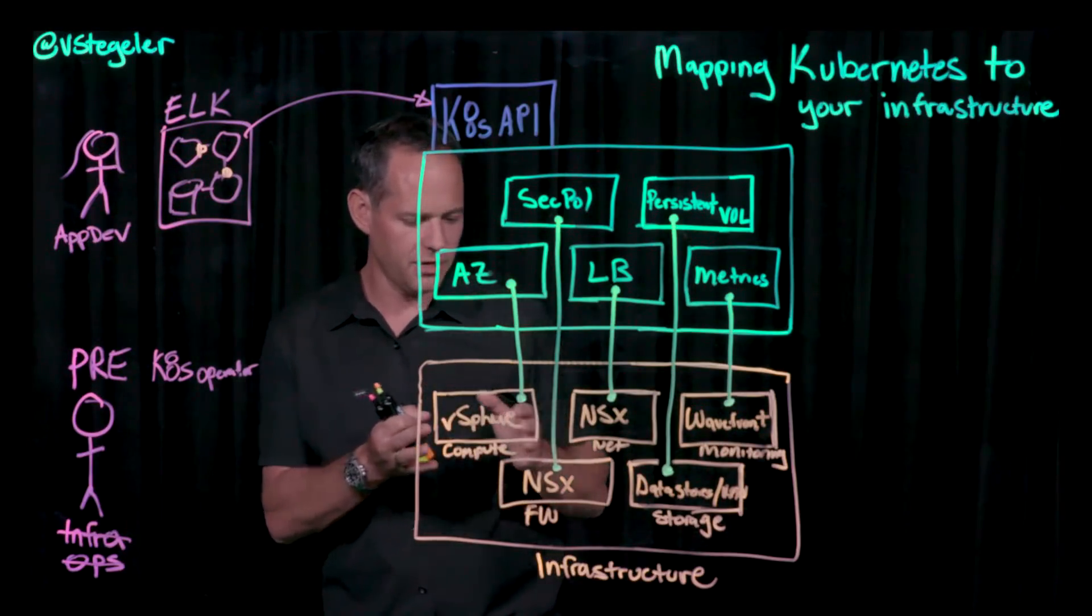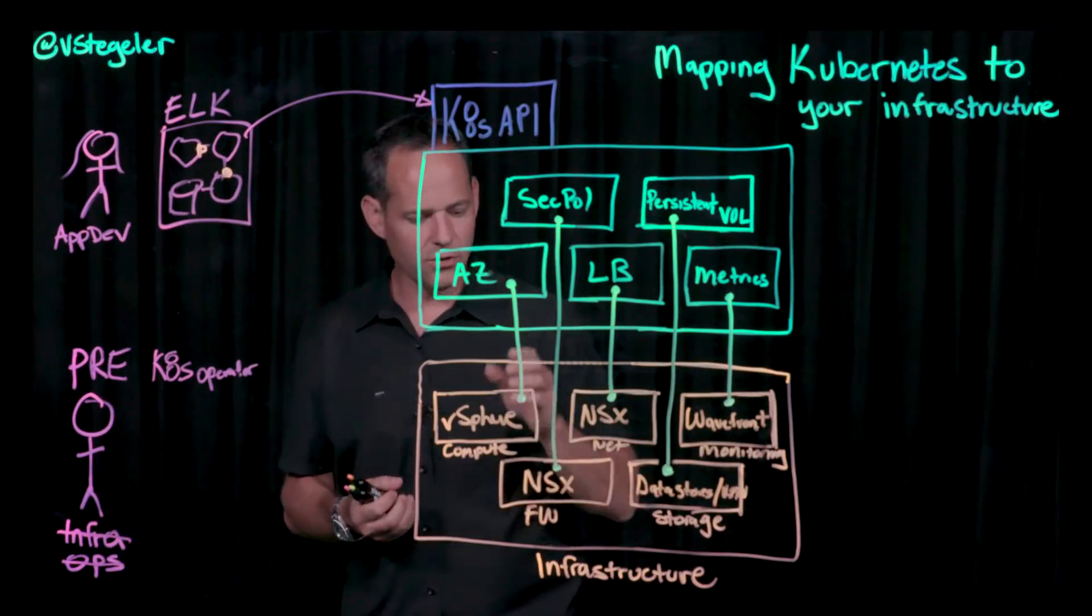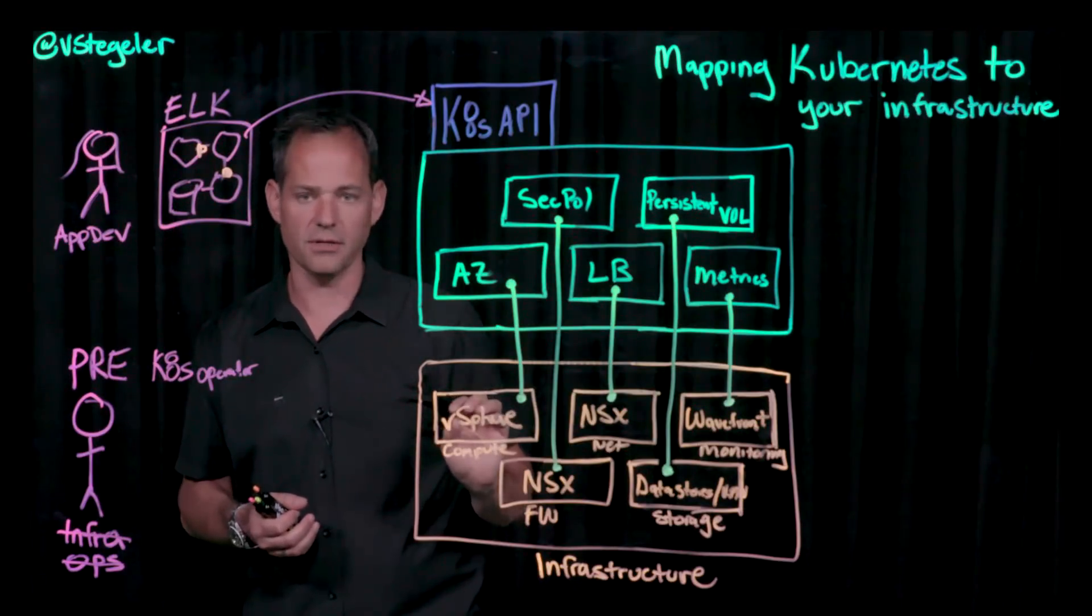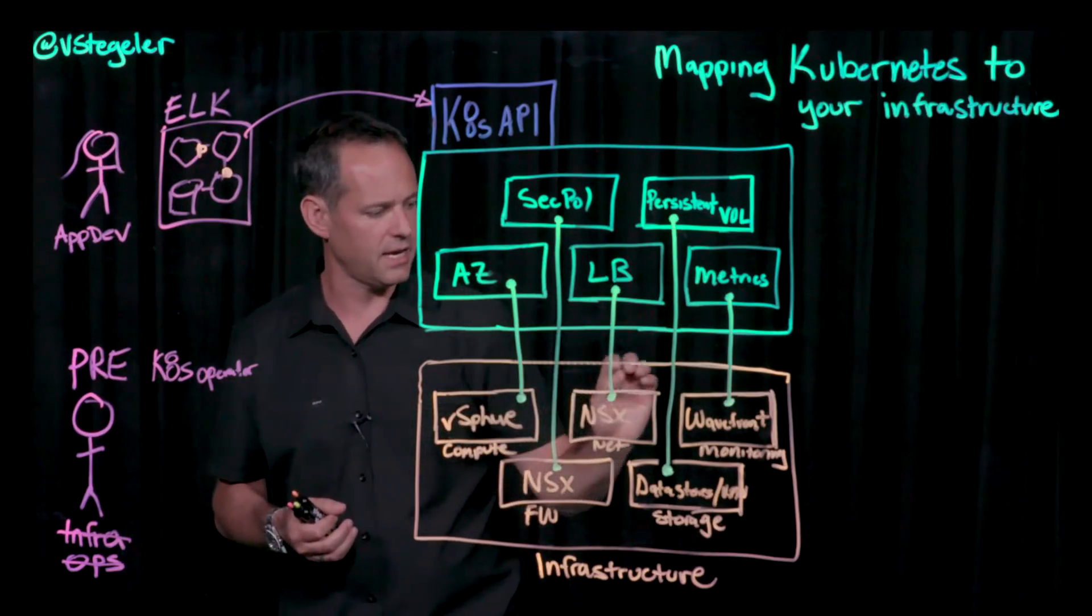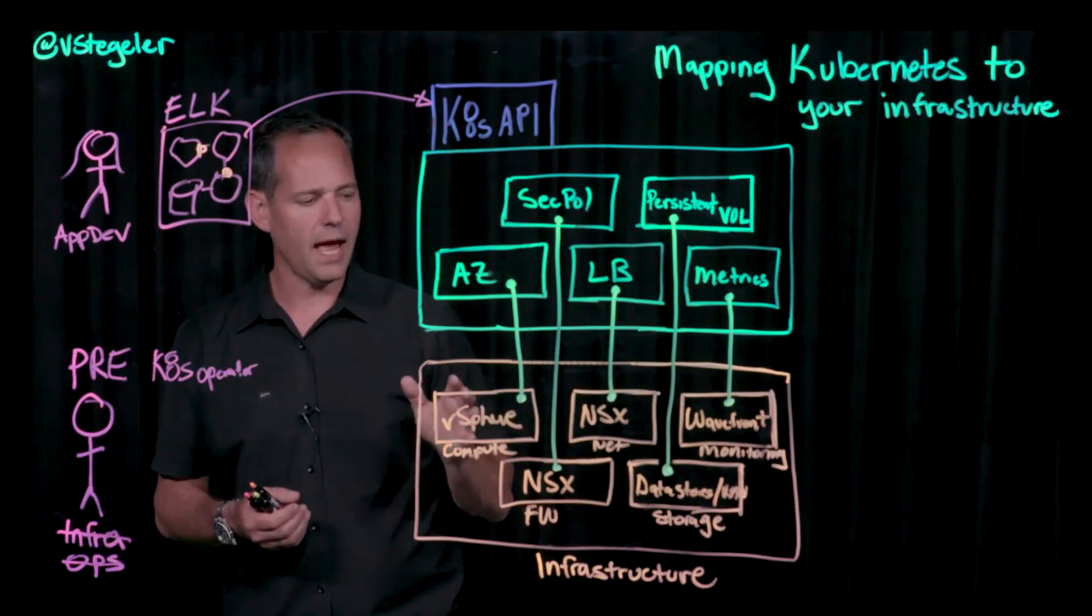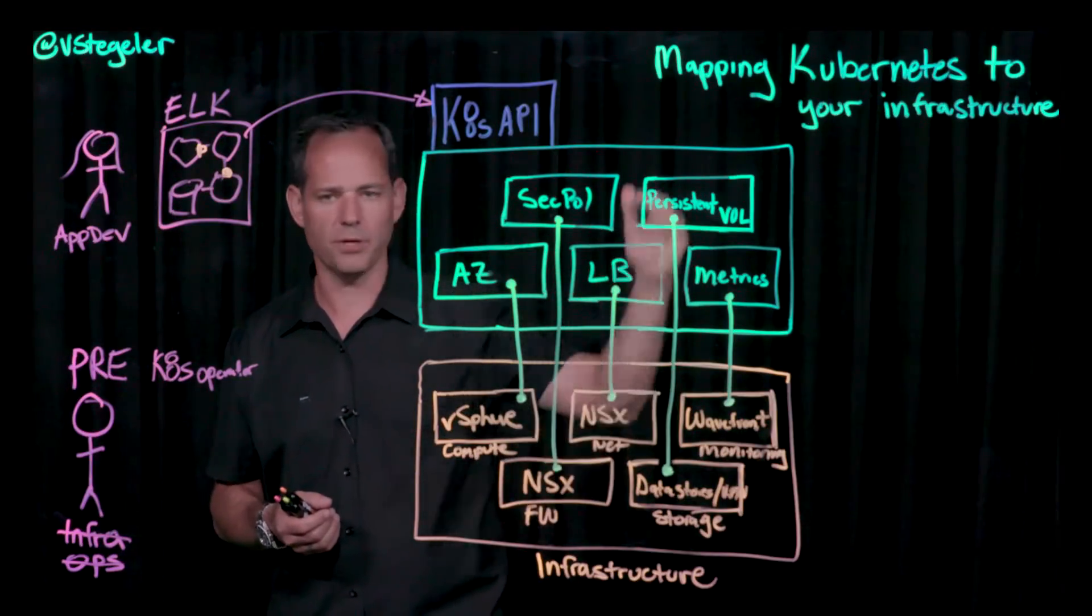Now, I've just defined all of the VMware constructs here. Certainly in each one of these, there's a value prop with just vSphere, NSX, Wavefront, and the storage solution. But the reality is I'm going to need to map and configure each one of those up into Kubernetes.